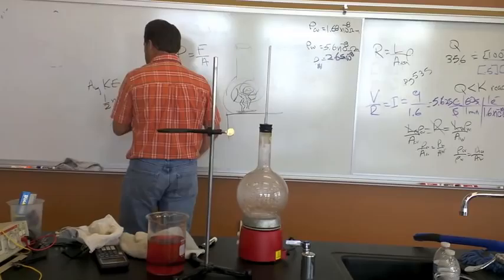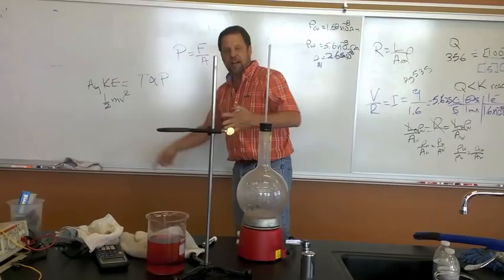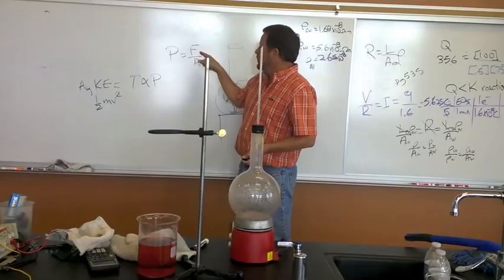If we take the average, we have all these molecules with velocity bouncing around. Since they're bouncing around, they cause a force when they hit. We divide it by the area, and we have pressure.